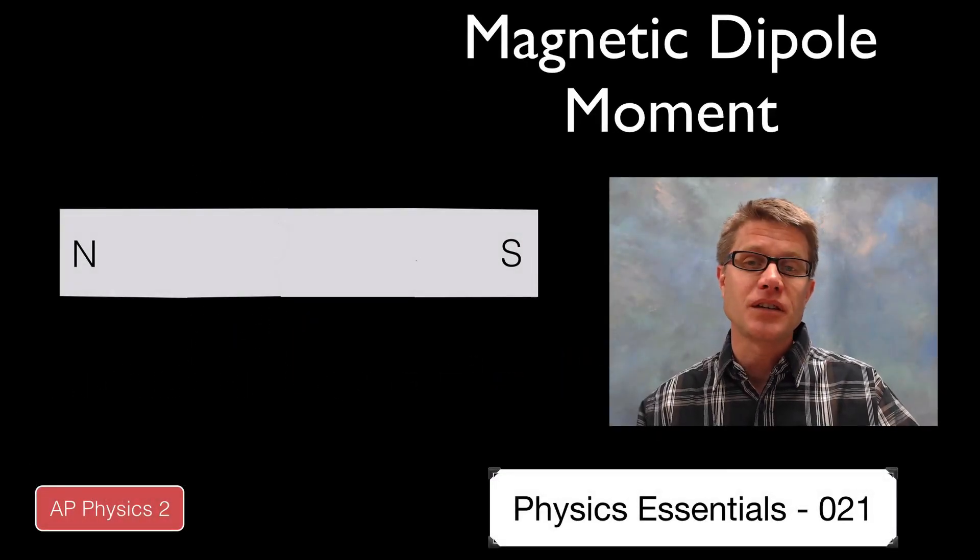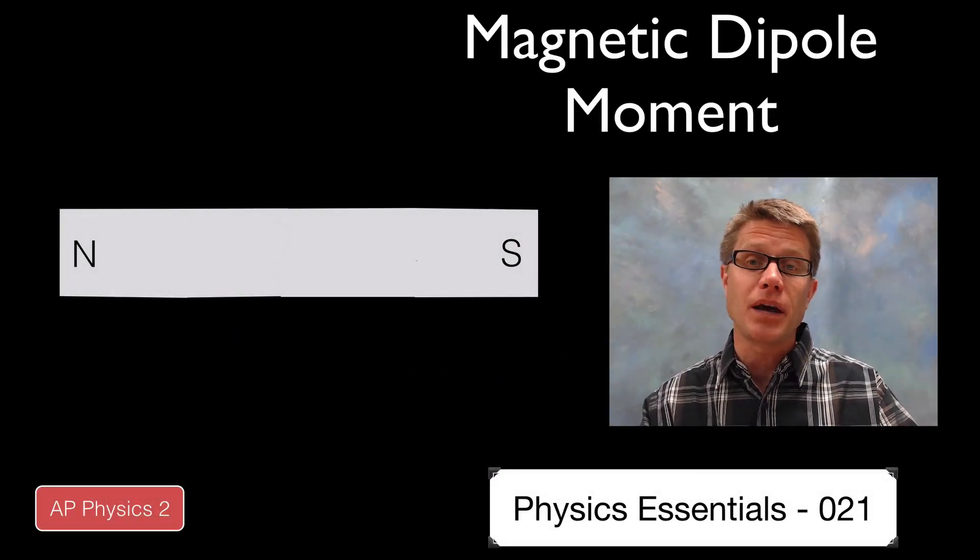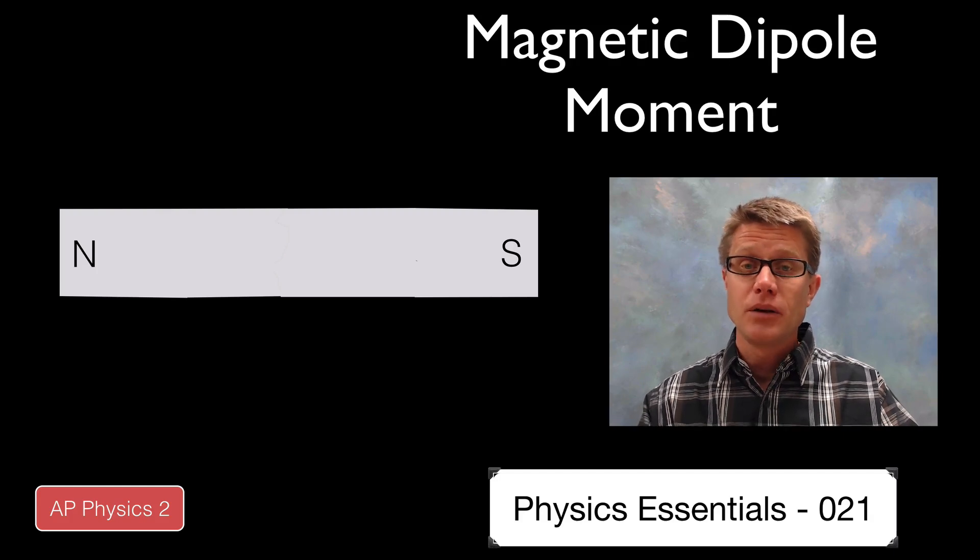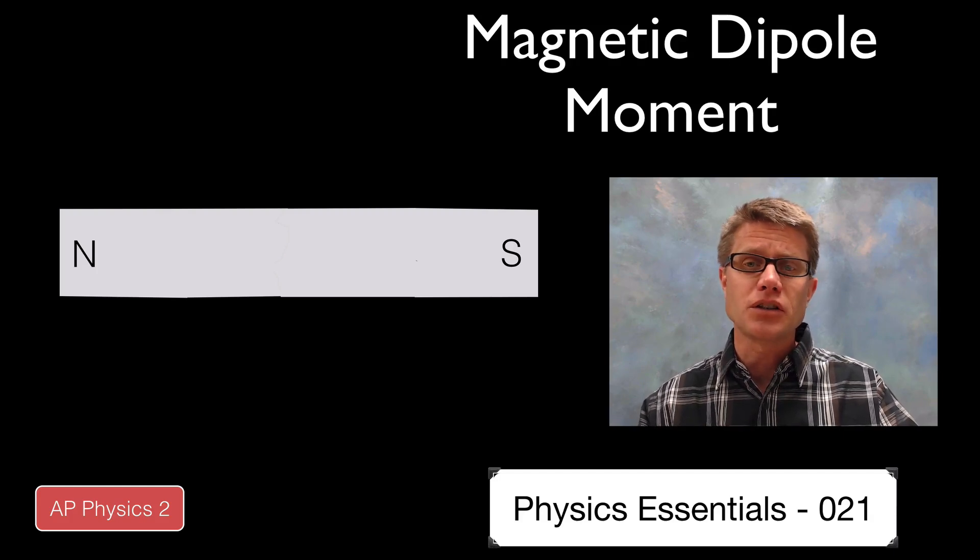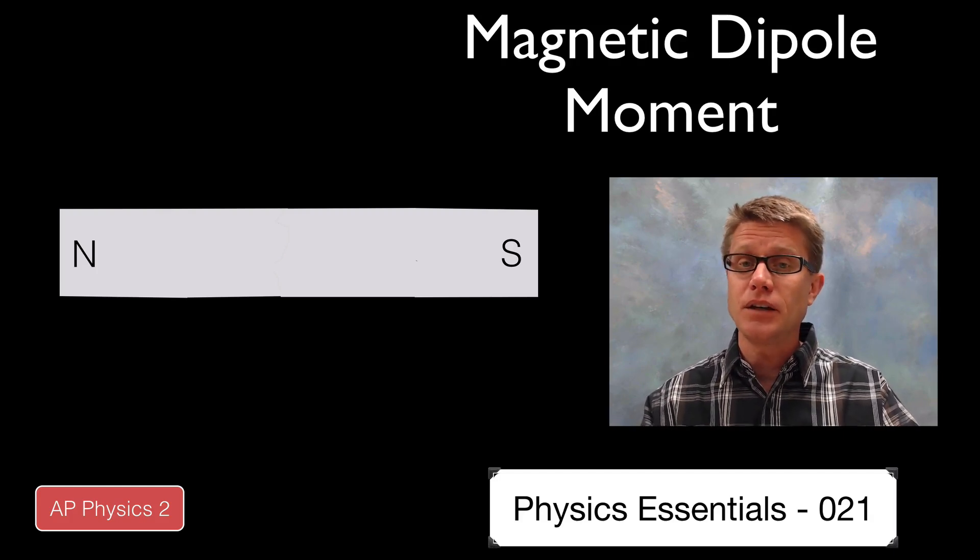Hi. It is Mr. Andersen and this is AP Physics essentials video 21. It is on the magnetic dipole moment, which is the torque that material experiences when you put it in a magnetic field.